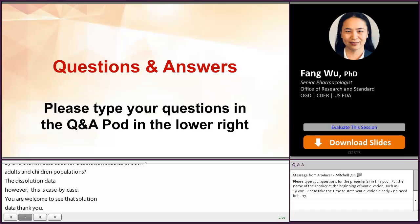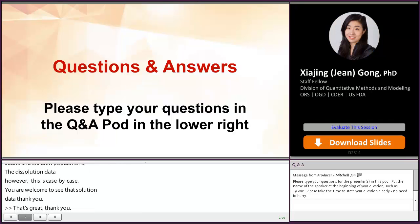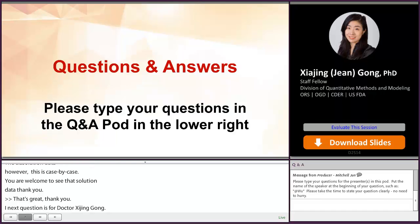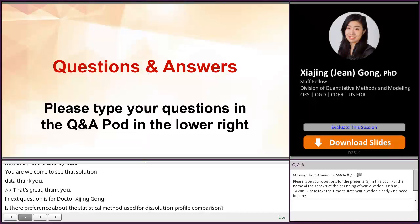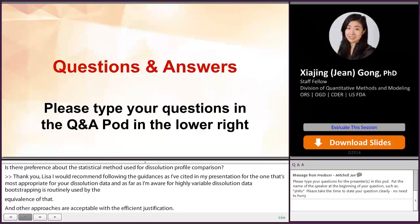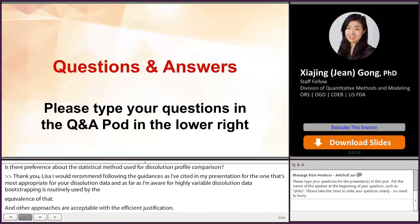Our next question is for Dr. Gong. Does FDA have a preference about the statistical method used for dissolution profile comparison? Thank you, Lisa. So I would recommend following the dissolution guidances, as cited in my presentation slides, for the method that's most appropriate for your dissolution data. And as far as I'm aware, for highly variable dissolution data, bootstrapping F2 is routinely used by the Office of Bioequivalence in OGD. And other approaches are also acceptable with sufficient justification. And currently, so to summarize, currently there is no strong preference over the statistical approach, as long as the dissolution data are justified.